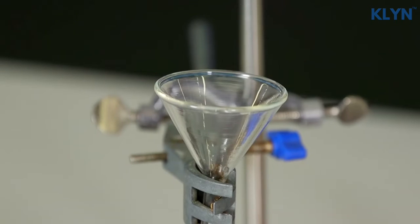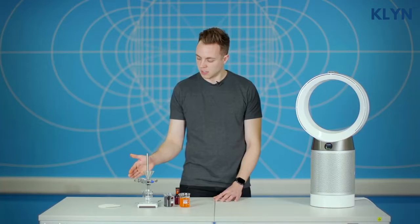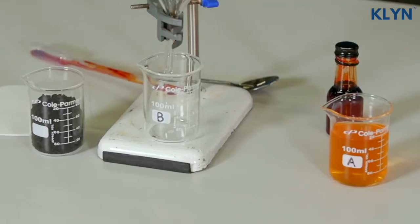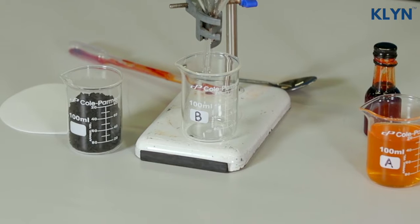Now, what I've got set up in front of me is a clamp stand holding a small glass funnel, some circular filter paper which I'm going to place inside the funnel, and an empty glass beaker underneath to catch the water we're going to pour through.